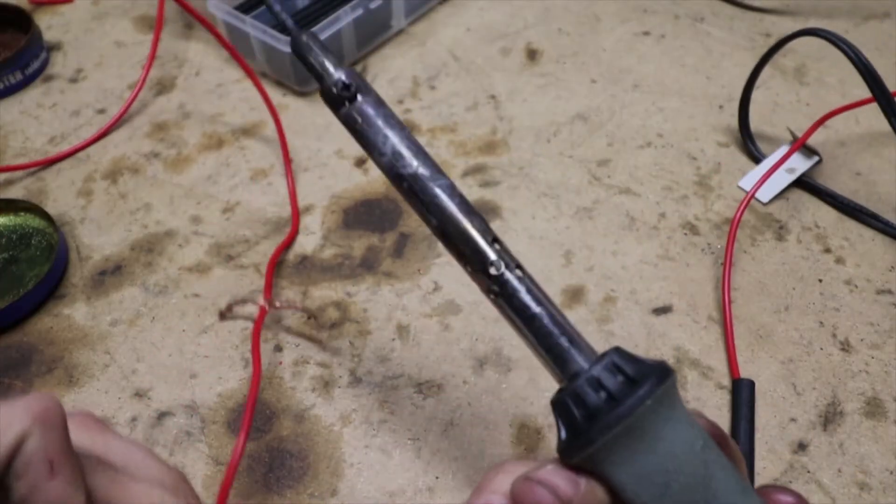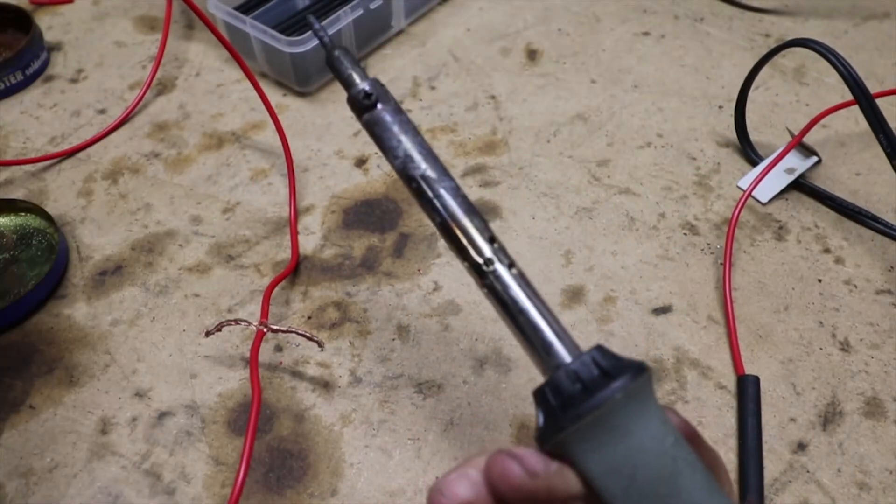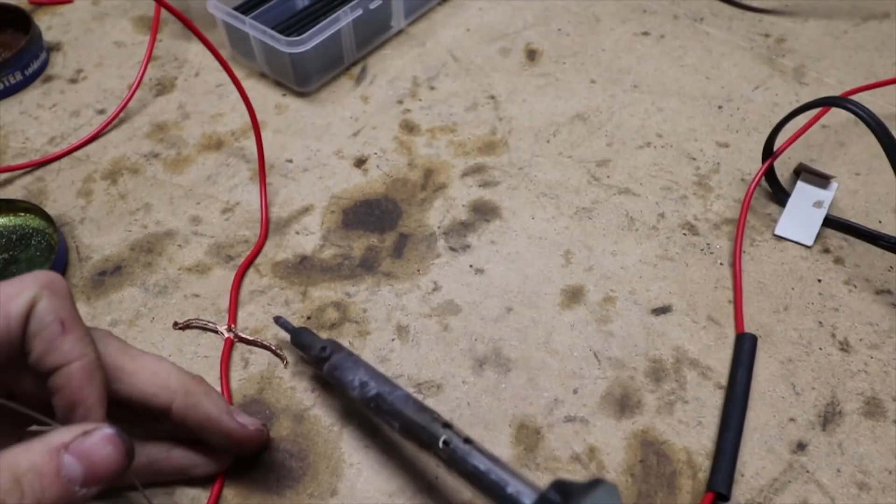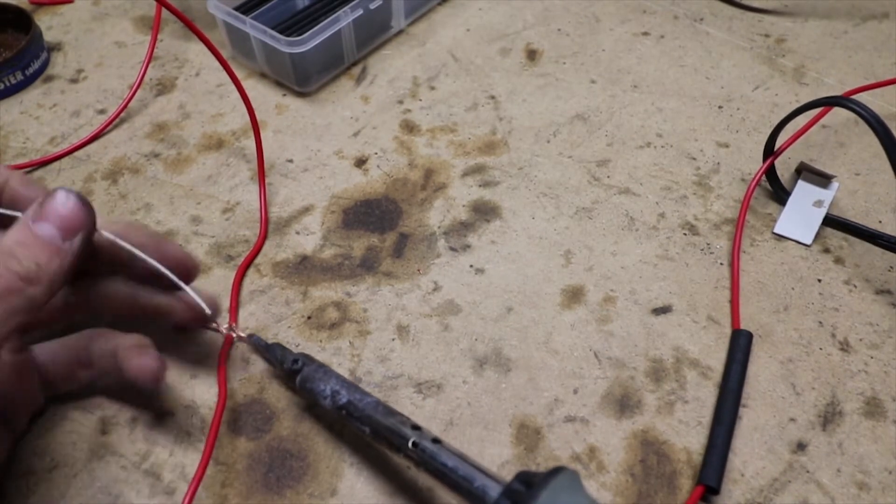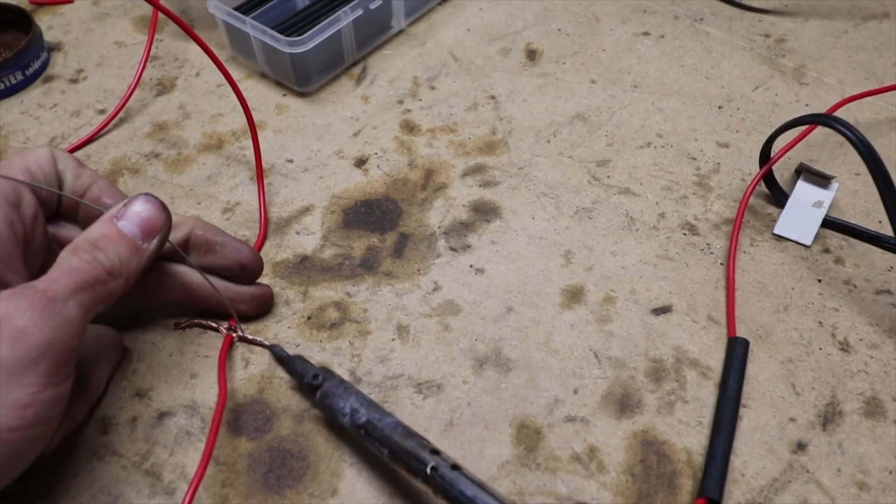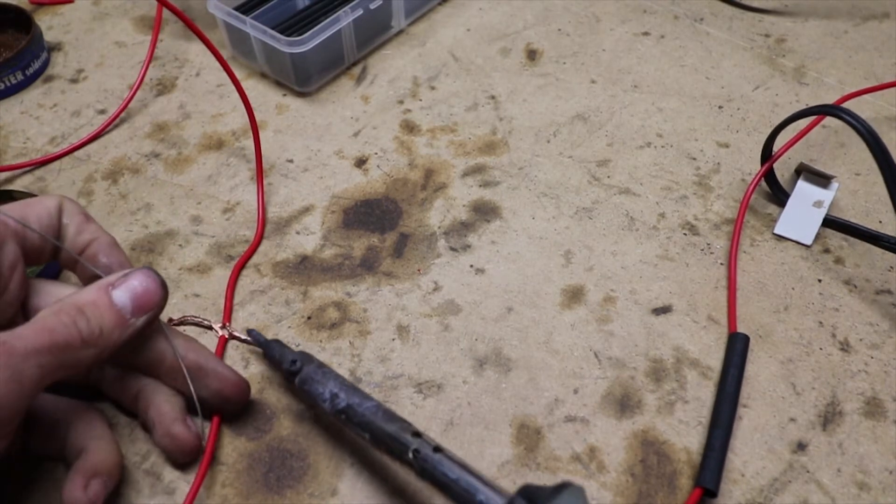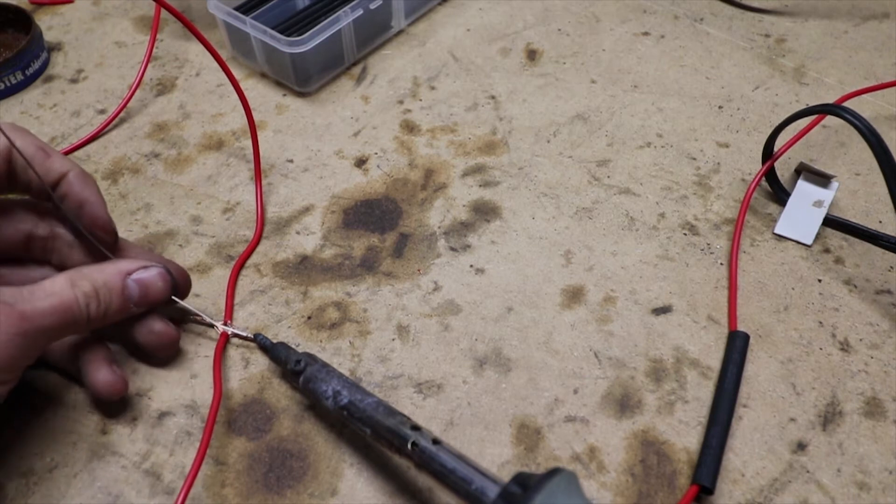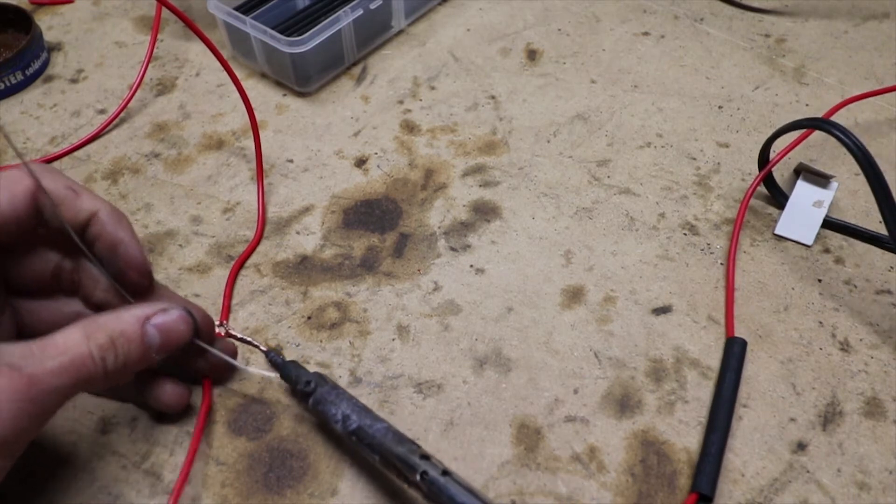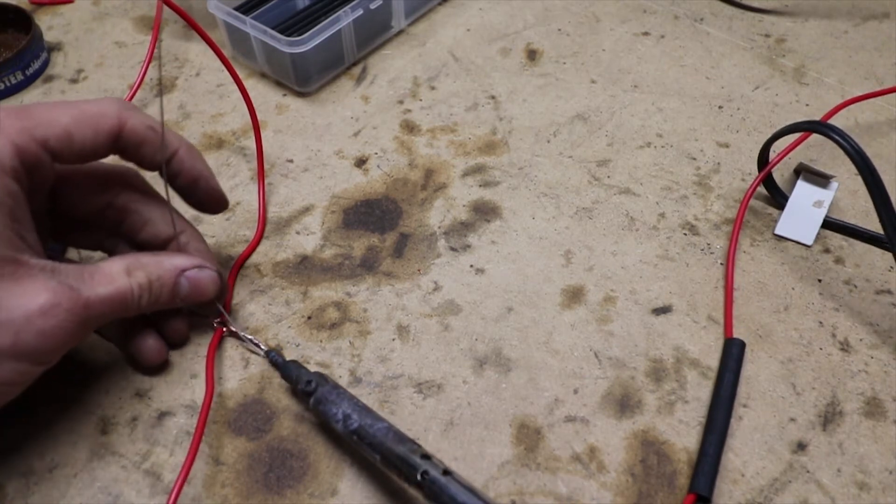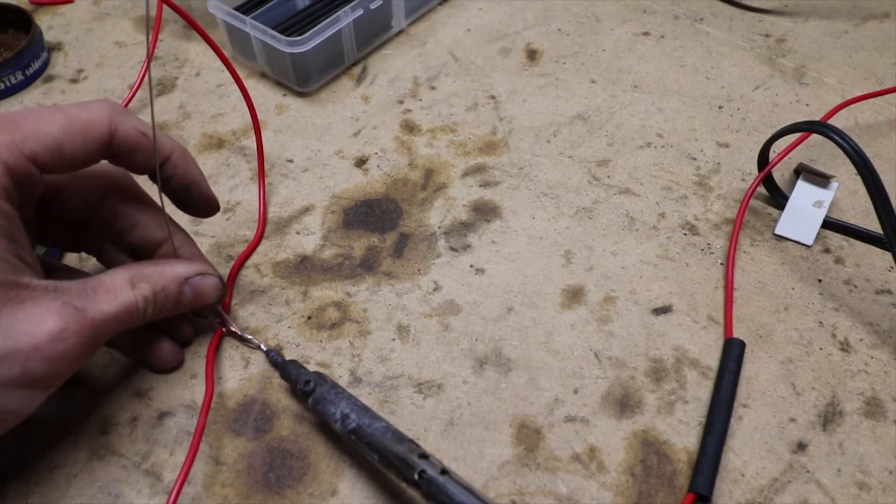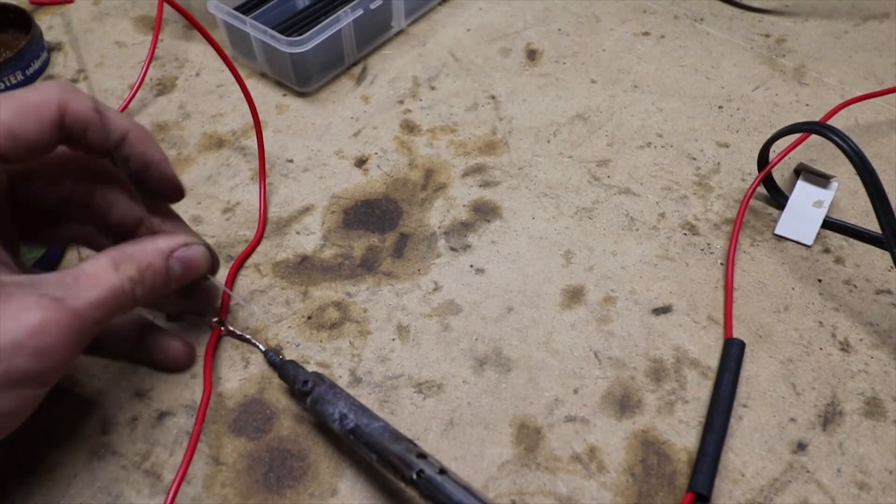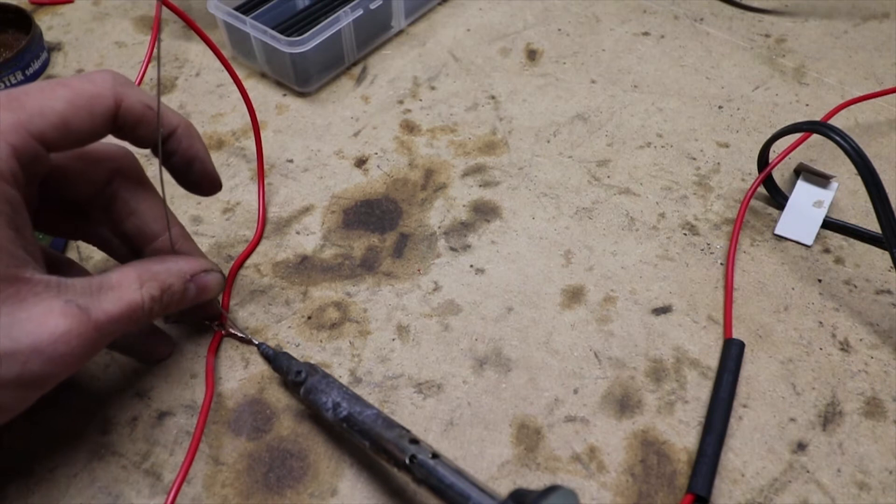Now right now I'm just using some crappy lead free solder. Ideally you'd be using lead solder. You want to heat up that paste and then you can start soldering the wires. Ideally starting from the side furthest away from the insulation, moving into the insulation.